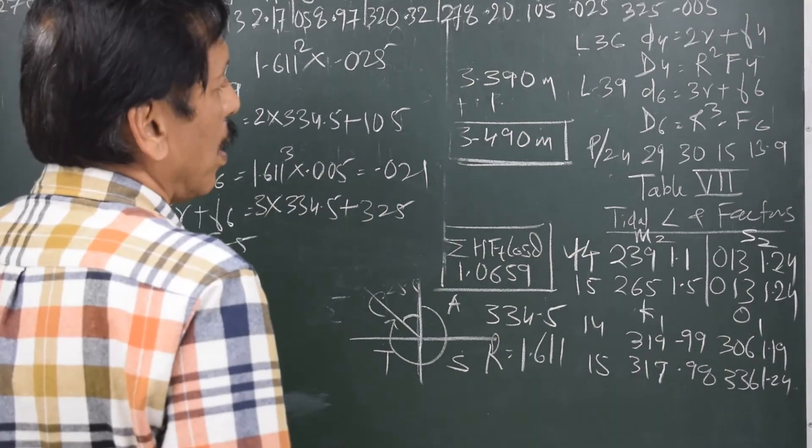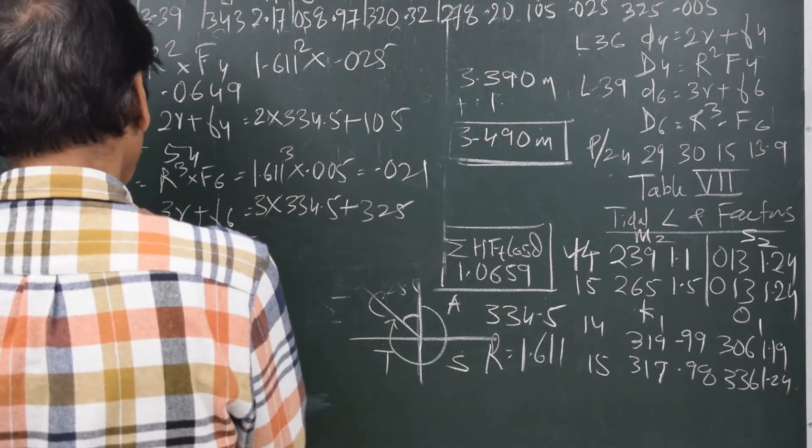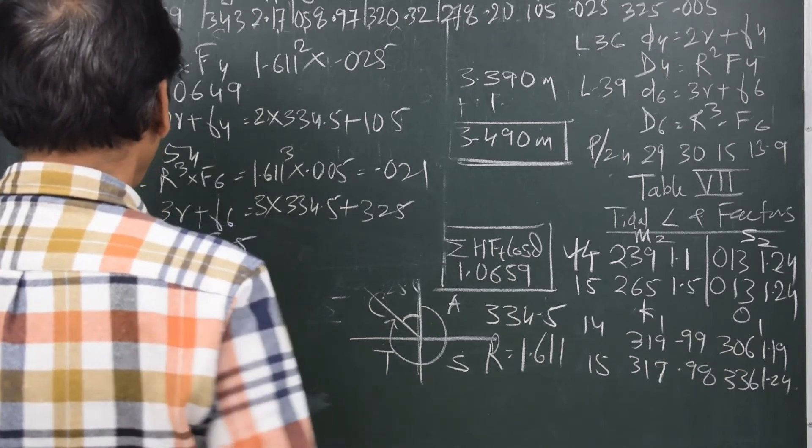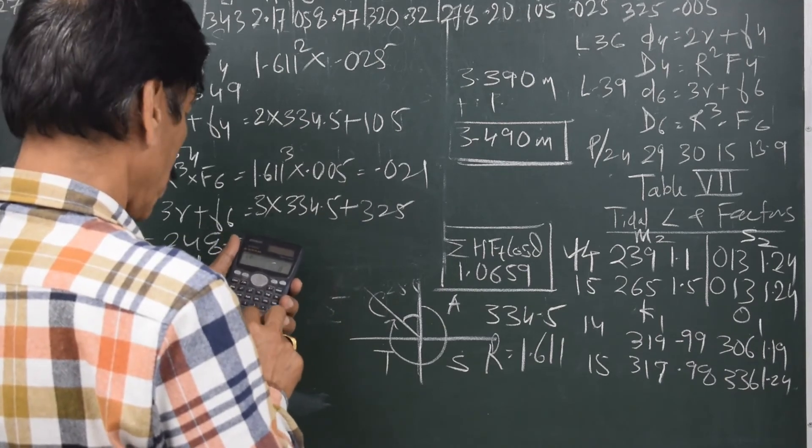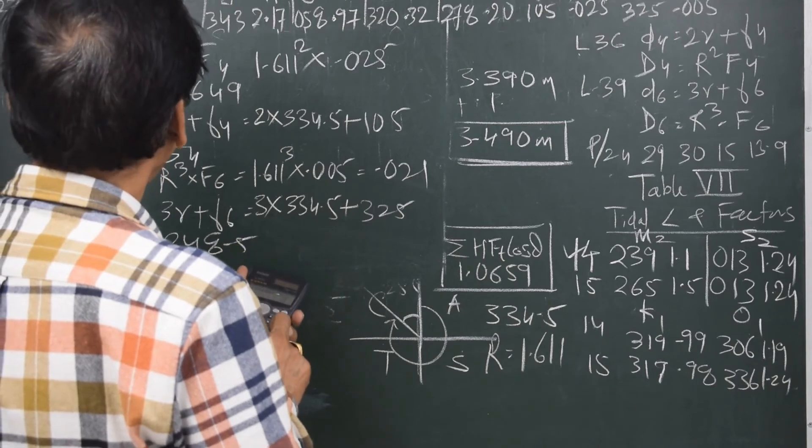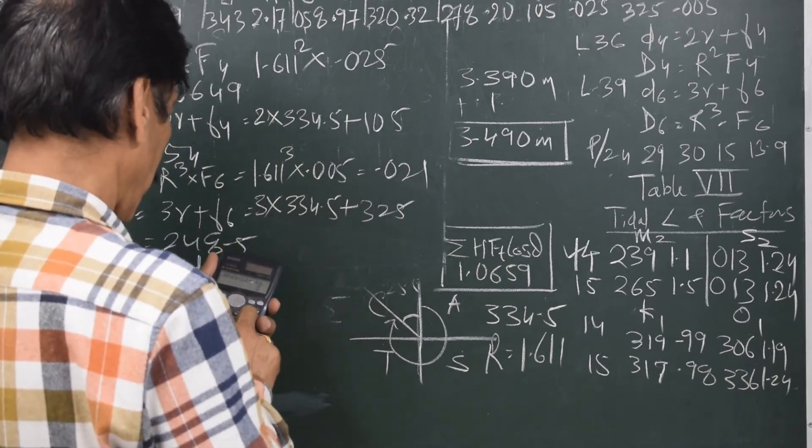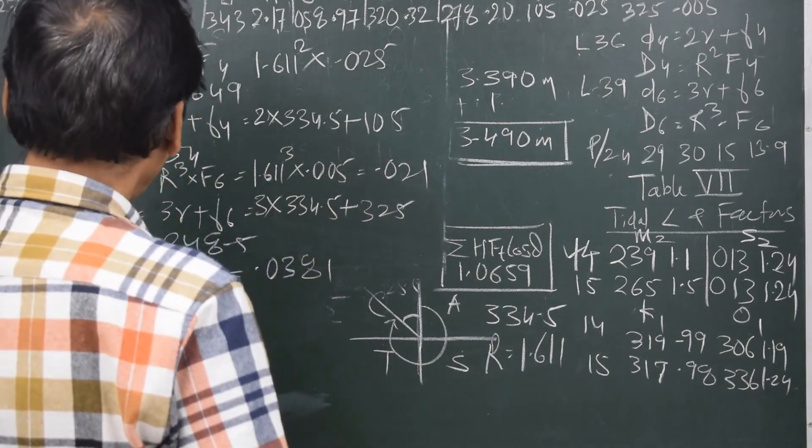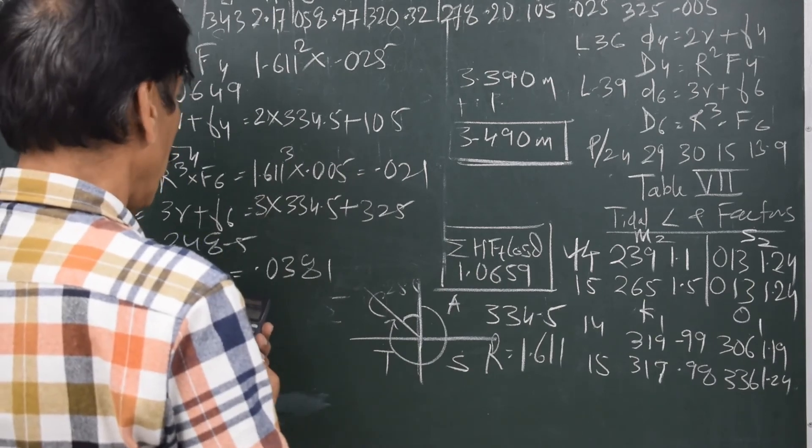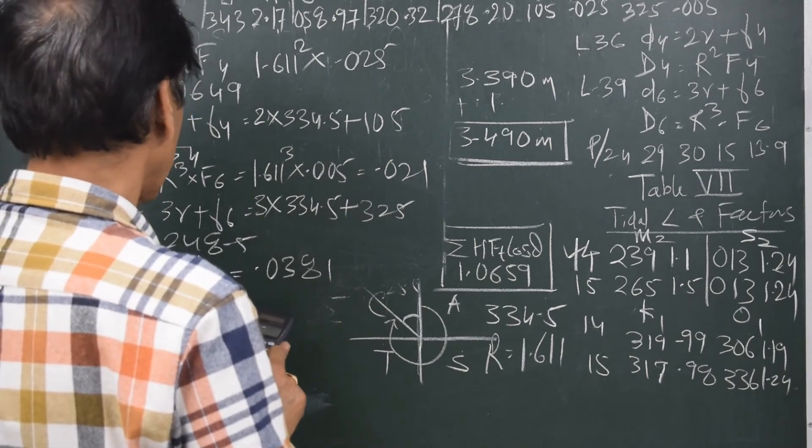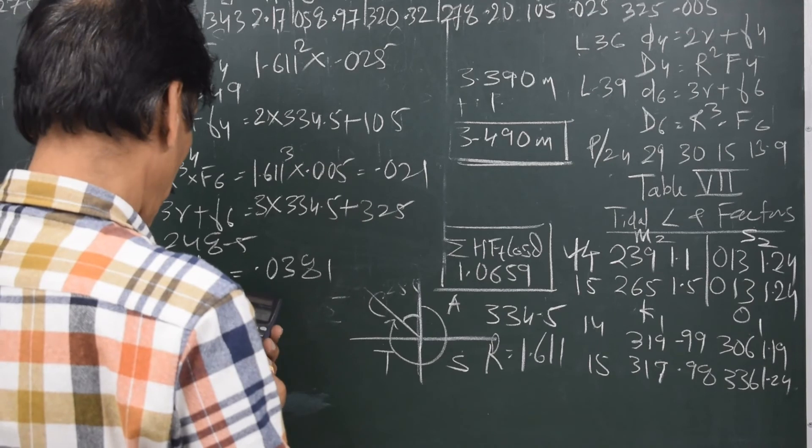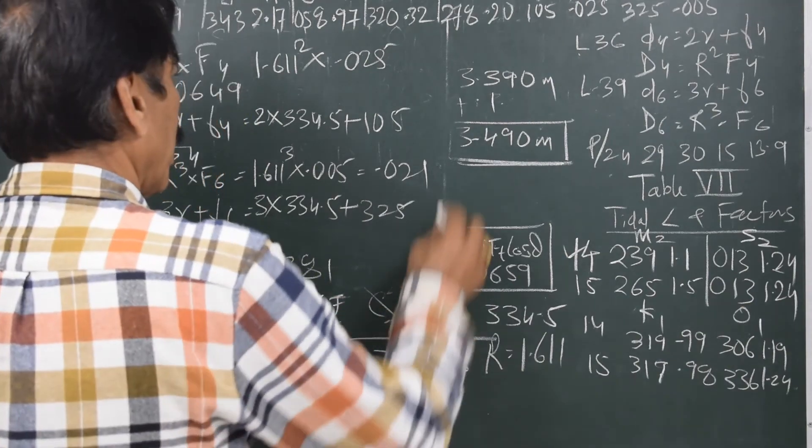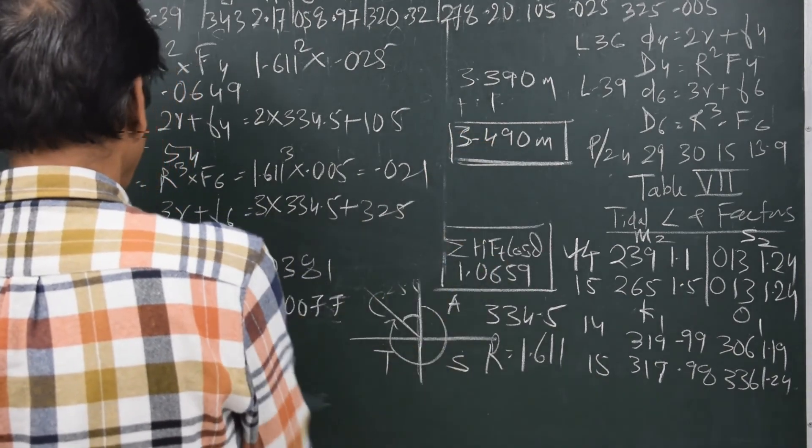Now the value of quarter diurnal correction is D4 cos D4, and one-sixth diurnal is D6 cos D6. Let us see how much is D4 cos D4: 0.0649 times cosine of 54 gives me 0.0381, positive. And D6 cos D6 is 0.021 times cosine of 248.5, which gives me minus 0.0077.